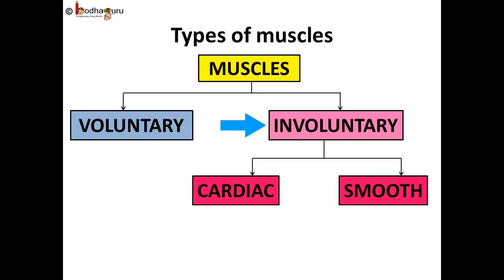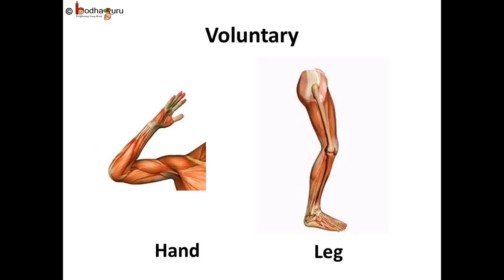Involuntary muscles are muscles which are not in our control, like cardiac muscles and smooth muscles. Voluntary muscles are the ones that we control. Most of them help us to move our bones around.